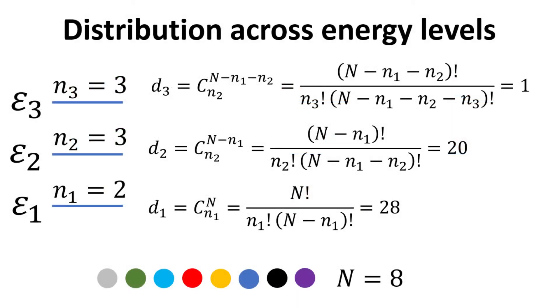The distribution of these particles across these three energy levels can be determined using the combination formula. See previous video in the link on permutation versus combination.